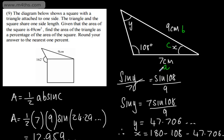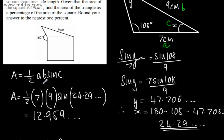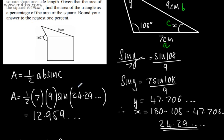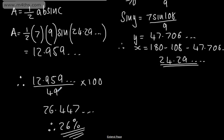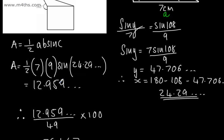So we've used the sine rule to find the missing angle, gone ahead and substituted that into one-half a b sine c to find the area, and then considered it as a fraction of the area of the square.